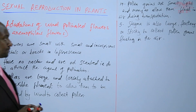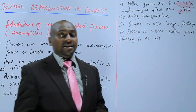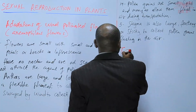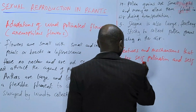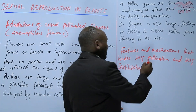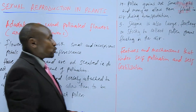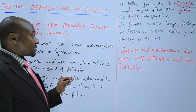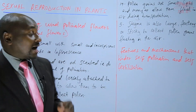The other thing we are going to learn are the features and mechanisms that hinder self-pollination and self-fertilization. There are some features that exist naturally to ensure that self-pollination does not take place, and if self-pollination does not take place, then self-fertilization cannot take place.